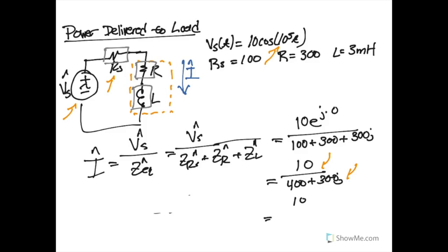If we take the bottom component and turn it into a polar format, that will be 500e to the j 36.8 degrees. Writing all of this out you will get 0.02e to the negative j 36.8 degrees, and this will be in amps. So step one of this is finding out what the current is flowing through this load. We found that it's a 20 milliamp load and it's out of phase by 36 degrees.